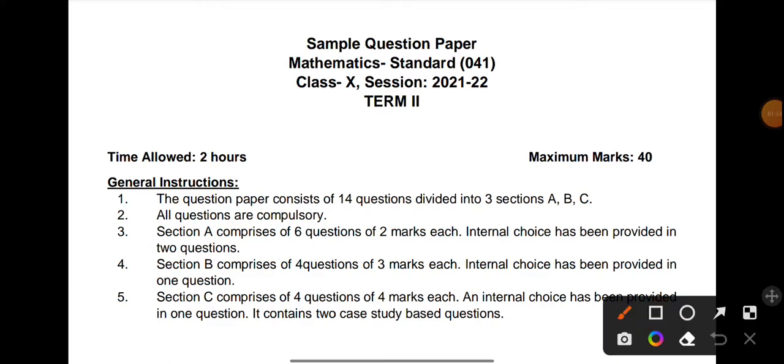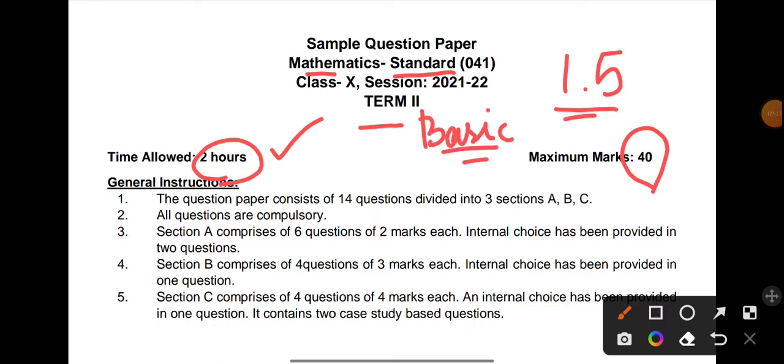This is big news and good news. I feel that in Term 1 you were given 1.5 hours timing, and here the time allowed is 2 hours, meaning you'll get two hours timing to solve the subjective questions. This is a good benefit. And the total marks given is 40. This is Term 2 Mathematics Standard paper. For those who have taken basic, they can also watch this, it's the same. Class X, Session 2021-22, your paper code is 041. This is released by the CBSE official site.